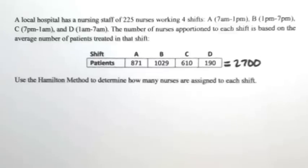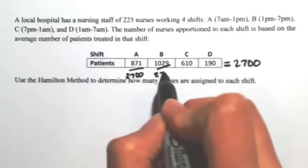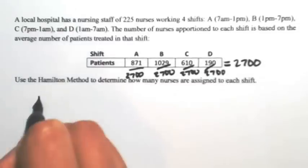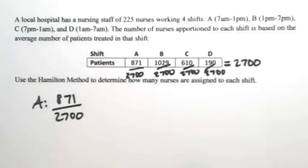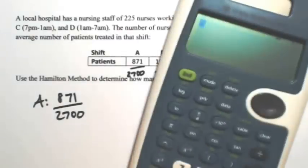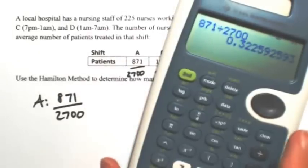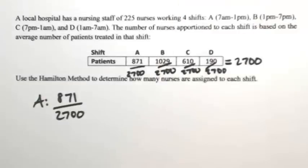So what we're going to do is figure out what is the percentage of each shift in terms of patients. So we're going to divide each of these by 2,700. So for shift A, we're going to have 871 divided by 2,700. So when we divide that out, shift A takes up about 32 percent, so 0.3226.